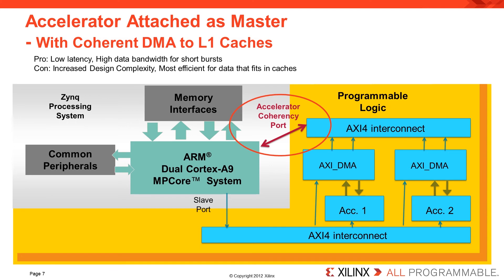The third method of attaching a coprocessor is via the Accelerator Coherency Port. The ACP interface provides very low latency connectivity between a PL-based accelerator and the L1 caches of the A9 processors. As in the previous example, the coprocessor requires a DMA controller to move the data between its local buffer and the L1 data caches. For many applications, coprocessors attached via the ACP will enable the highest coprocessing performance.